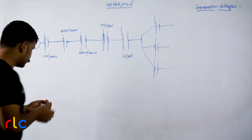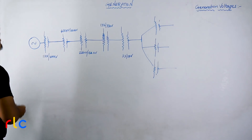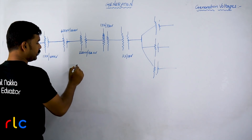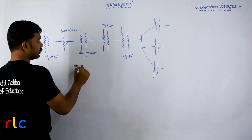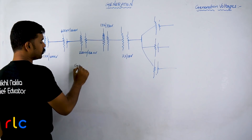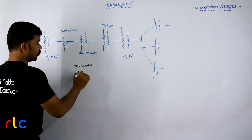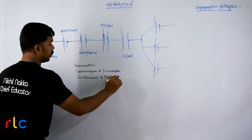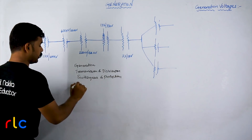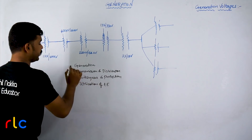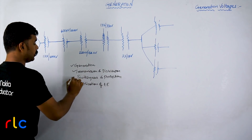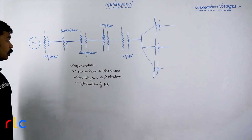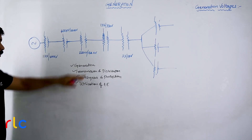When we talk about power system study, we basically study four main aspects: one is generation, the next is transmission and distribution, then switchgear and protection, and finally utilization of electrical engineering. These four aspects cover the topic of power systems.